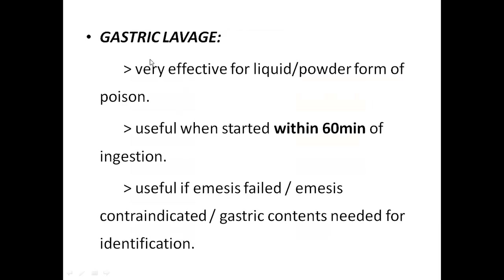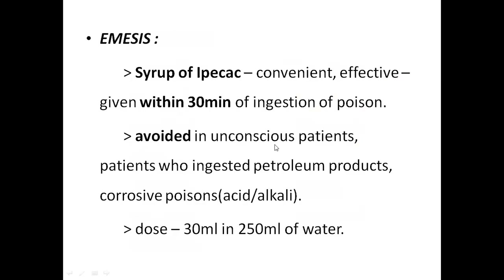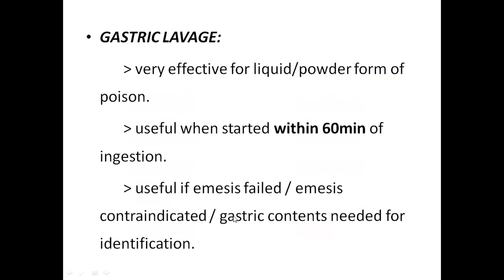Gastric lavage is very effective for liquid and powder forms of poison, and is useful when started within 60 minutes of ingestion. It is used when emesis has failed or is contraindicated — for unconscious patients, petroleum product ingestion, or corrosive poisons. It is also used when gastric content is needed for identification of the poison.